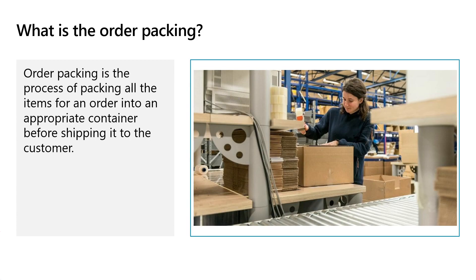Let's get started and define what order packing is. Order packing is the process of packing the items of an order into an appropriate container before shipping it to the customer. The packing process is the second step in the order fulfillment, right after the picking process. Usually the packing process is the last step that takes place in the warehouse before the order leaves for delivery.